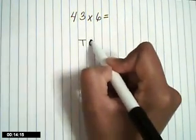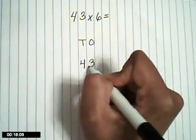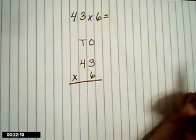Make sure that you have your place values in place. 4 tens, 3 ones, 6 ones. 43 times 6. The 6 is going to be multiplied by everything on the top.